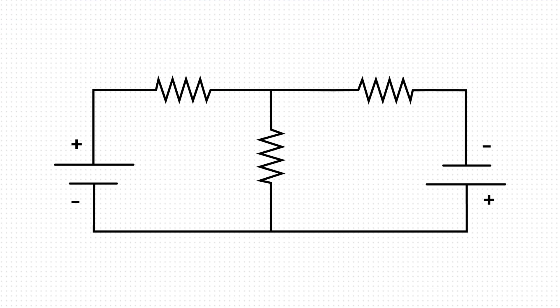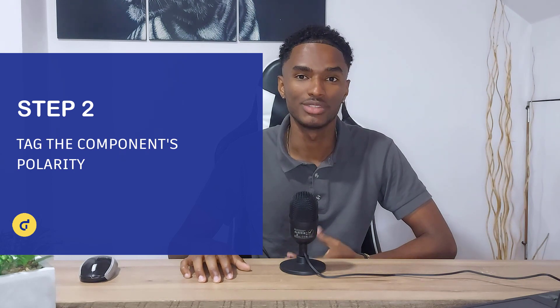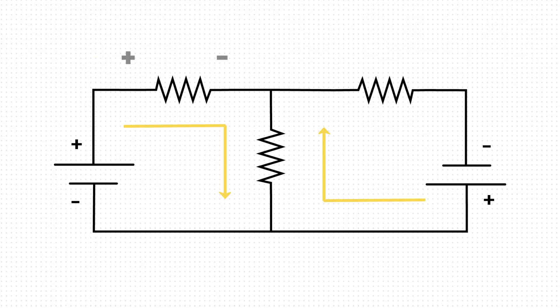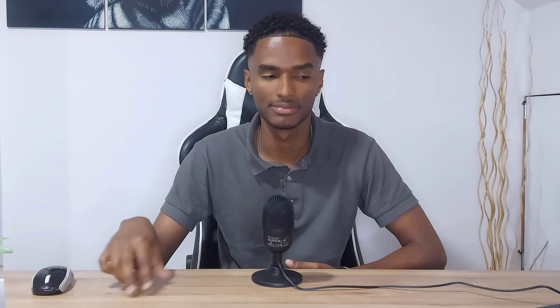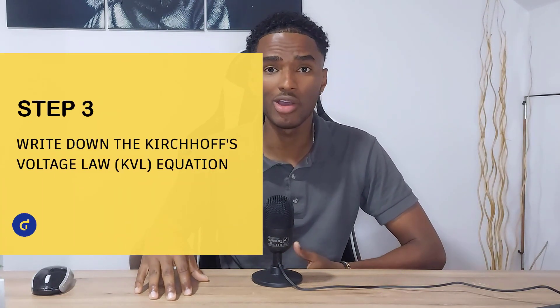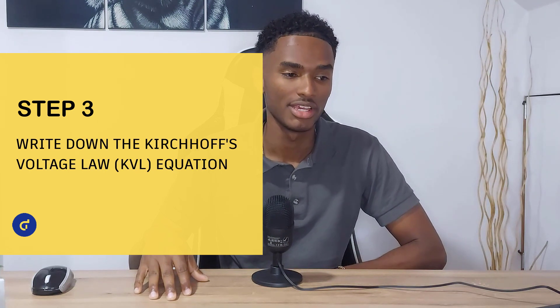What I basically do is write the current direction coming out of the positive pole of the bigger voltage source in the network. Step two: we need to tag our components' polarity. Resistors cause voltage drops, so the current must be flowing from a higher potential to a lower potential — that means positive to negative. Finally, we can write down our KVL equation. Voltages in the same sense are positive, and voltages in a different sense are negative.